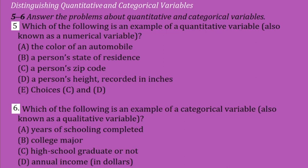Question 6: which of the following is an example of a categorical variable, also known as qualitative variables? A: years of schooling completed; B: college major; C: high school graduate or not; D: annual income in dollars; E: choices B and C. These answers of questions 5 and 6 will be seen in the next.